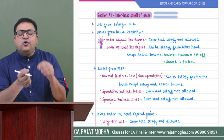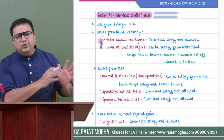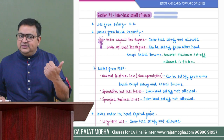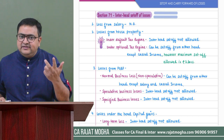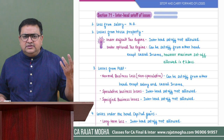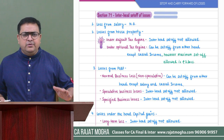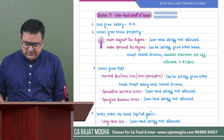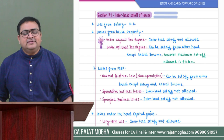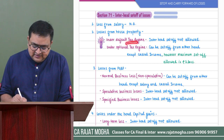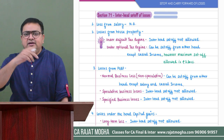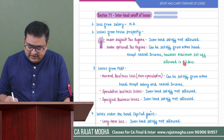But if the assessee is following the optional tax regime — that is the old tax regime — then house property losses can be set off from any other head. However, there is a restriction of two lakh rupees maximum. This is not a new amendment; it has been in place for two or three years.